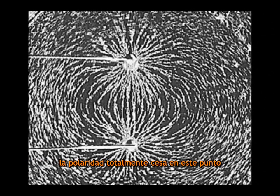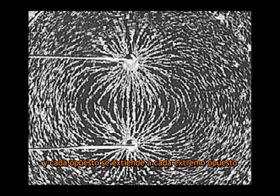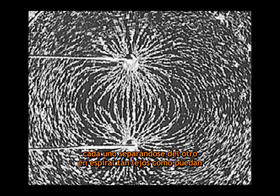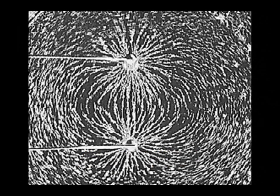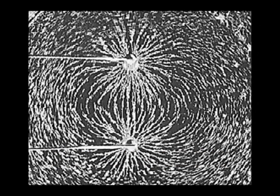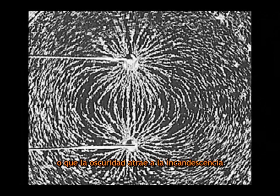Polarity utterly ceases at this point and each opposite extends to each opposite end, each getting away from and through the other spirally as far as they can. To say that opposites attract each other, therefore, is the equivalent to saying that north attracts south, inward attracts outward, wetness attracts dryness, or that darkness attracts incandescence.